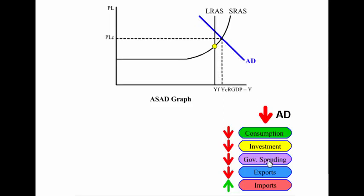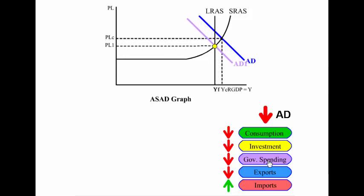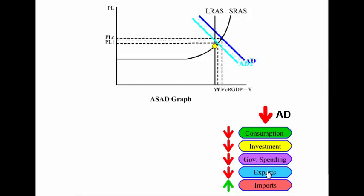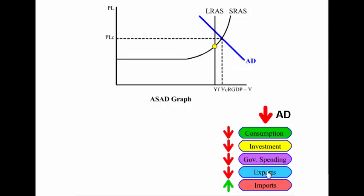If there's a decrease in government spending, this will shift aggregate demand to the left, driving the price level down and the real GDP and national income down. If there's a decrease in exports, this will also shift aggregate demand to the left, driving the price level down and the real GDP and national income down.